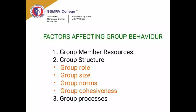Let's look at factors that affect group behavior and group dynamism. The first factor is group members' resources — the utility members carry with themselves, such as knowledge, skills, passion, and personality traits, which can either favorably or unfavorably affect group dynamism. The second factor is group structure, which includes four important elements: group role, group size, group norms, and group cohesiveness. The third factor is group processes — the way the group functions and executes its structure.